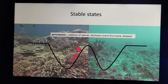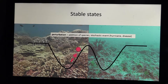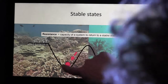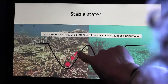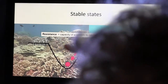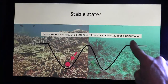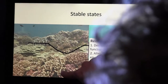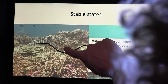When a perturbation happens, like a storm or a disease outbreak, it can push the system from the bottom of the basin up the hill to the top. But when the perturbation goes away, the system will tend to return back to the center of the basin. So the size of the whole basin is a measure of the resilience of the system. When we disturb an ecosystem by removing species or polluting, what we're doing is changing the basin of attraction — it goes from being deep to being shallow.